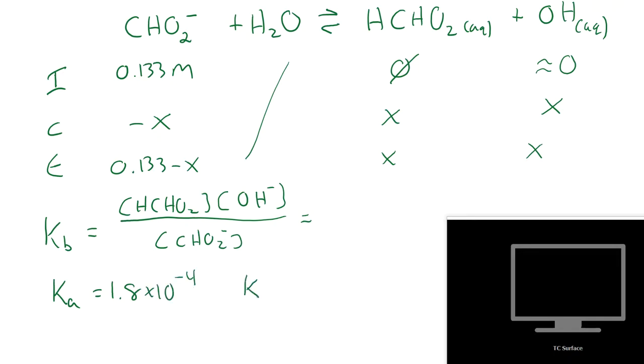So how do we find Kb? Well, if you remember, Ka times Kb is just Kw. So Kb is going to be Kw over Ka or 1 times 10 to the minus 14th divided by 1.8 times 10 to the minus 4th. So if I take that calculation, put it in my calculator, I can put the answer up here. It is 5.56 times 10 to the minus 11th. So there's our Kb.